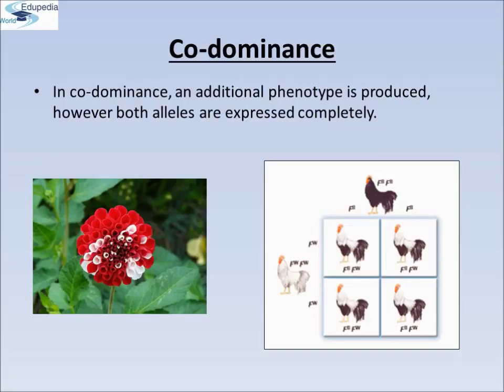The alleles for feather color are codominant — neither dominant nor recessive. As you can see in the figure below, neither allele is masked in the heterozygous chickens. The codominant alleles are written as capital letters with superscript FB for black feathers and FW for white feathers. The Punnett square shows that the heterozygous chickens have both FB and FW allele combination. Similarly, the heterozygous codominant flower also has both the capital R and capital W, that is the white petal genotype present in it.